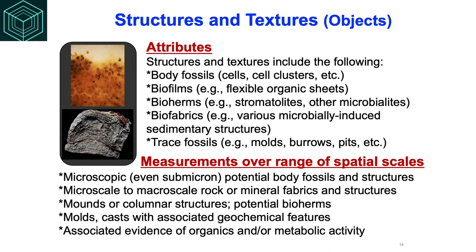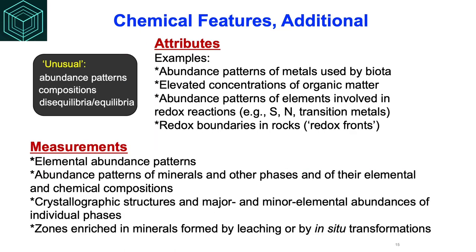Structures and textures are the original first-recognized biosignatures in the rock record, involving various aspects of rock textures, body fossils, biofilms, bioherms, biofabrics, and even trace fossils. The key point is that these are visual observations that need to be conducted all the way from the submicron scale — for cells — up to potentially hundreds of meters for reef-type communities as seen on Earth. Chemical features are an additional category embodying inorganic minerals, elemental abundance patterns, elevated organic concentrations, and redox boundaries, which could be places where organisms derive energy. Measurements of abundances and redox patterns associated with these would be conducted.